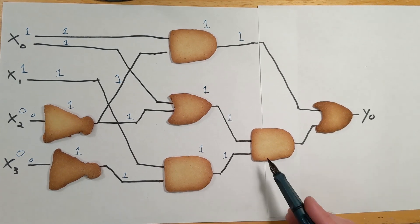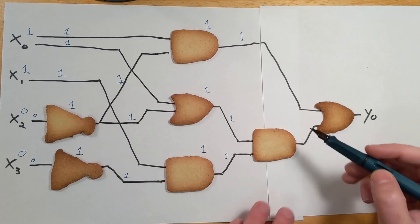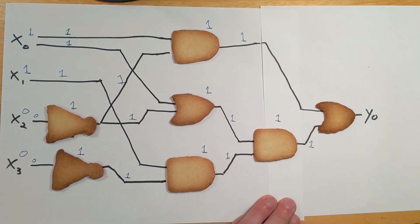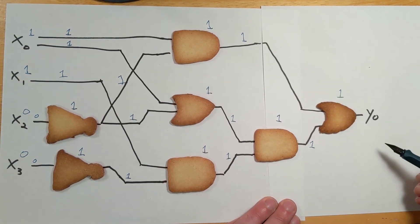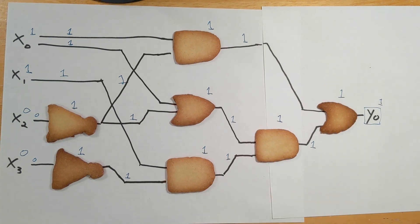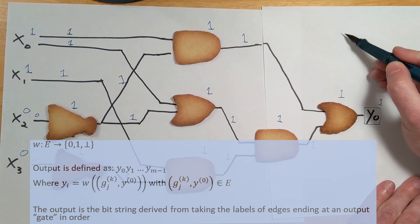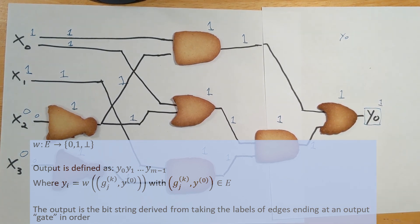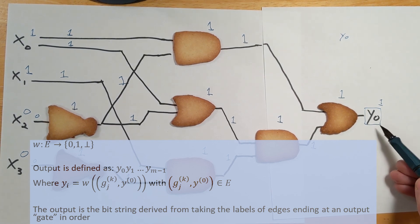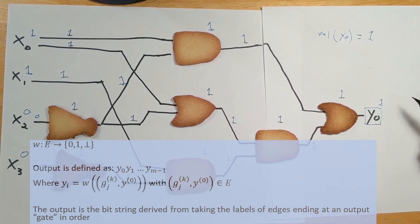Now we can compute the value for this final gate. Its inputs are both one, and its label is AND, so we perform AND on the inputs — this gate's value is one. That means this edge's value is one, which allows us to conclude this gate's value is one, and so Y0's value is one. We've filled in everything we can on this circuit. Looking at our definition for how we get output: we find the value of Y0, which is one. So our output is one.